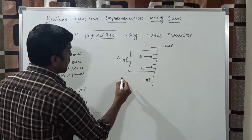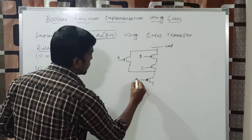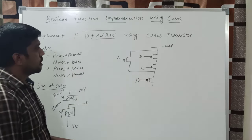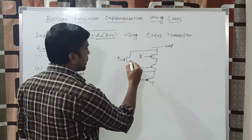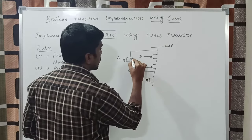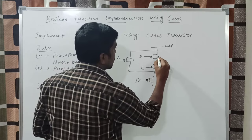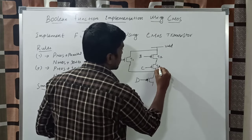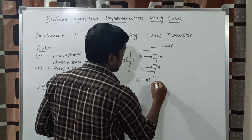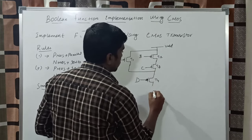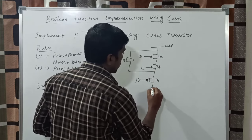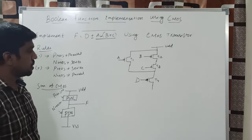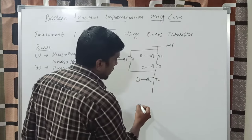The input bar is D. This completes the pull-up network. You assign the transistors T1, T2, T3, and T4. This is the pull-up network.